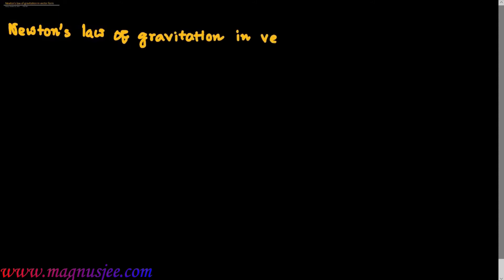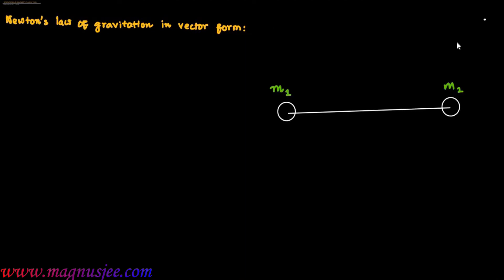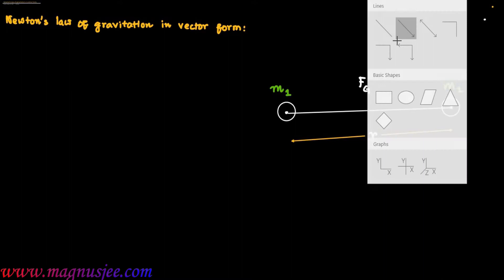Newton's law of gravitation in vector form. These are two bodies — m1 and m2 are the masses of two bodies, and r is the distance between the centers of two bodies. Fg is the gravitational force of attraction between the two bodies.